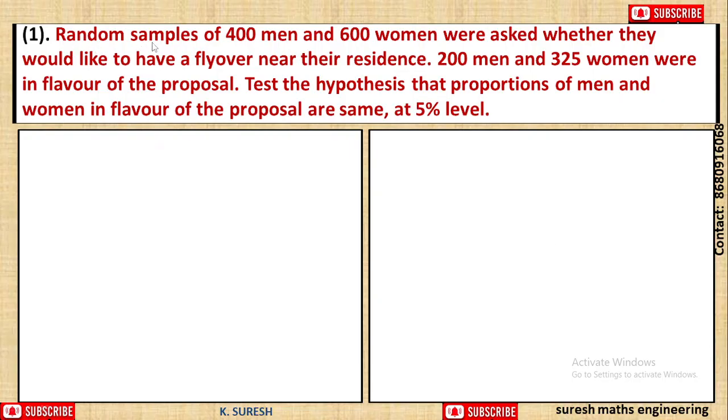Random samples of 400 men and 600 women were asked whether they would like to have a flyover near their residence. 200 men and 325 women were in favor of the proposal. Test the hypothesis that proportions of men and women in favor of the proposal are same at 5% level.